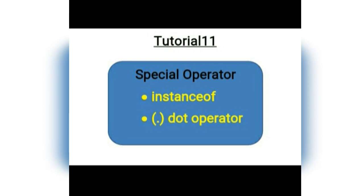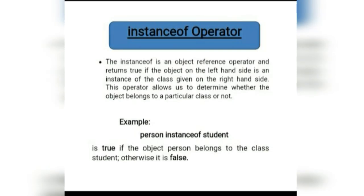Let's begin with the instanceof operator. Many times we need to know whether a particular object belongs to a particular class or not. To do so, we use the instanceof operator, which is the object reference operator. It returns true if the object on the left-hand side is an instance of the class given on the right-hand side, allowing us to determine whether an object belongs to a particular class.